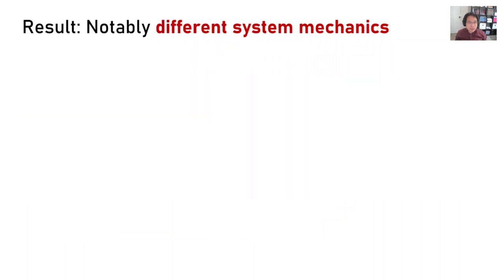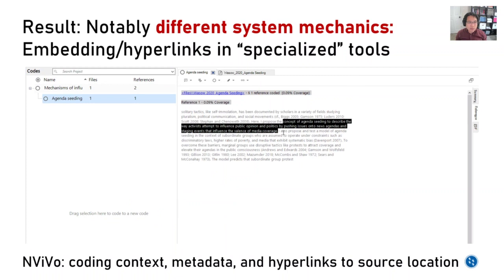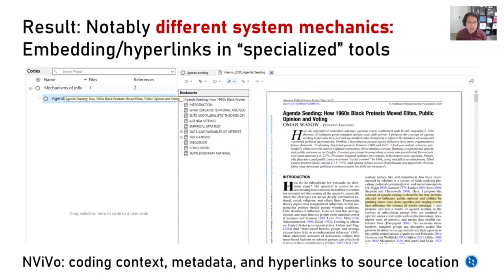There were also notably different system mechanics. For example, in NVivo, users were able to peek around the context of an excerpt, have metadata embedded in the excerpt, or follow a hyperlink back to the source location of the excerpt in a single click.